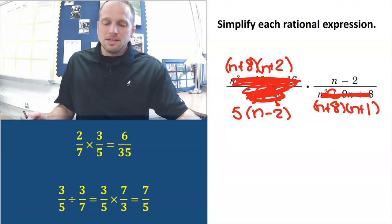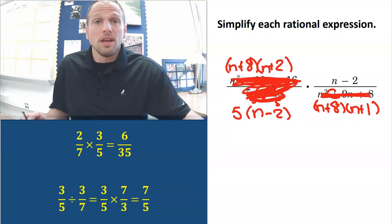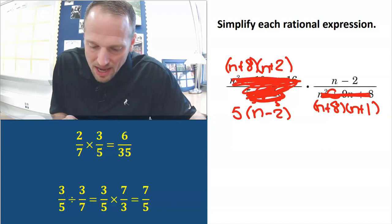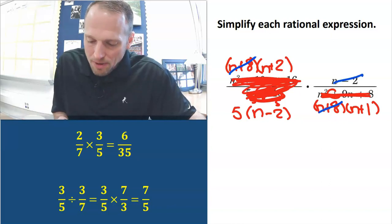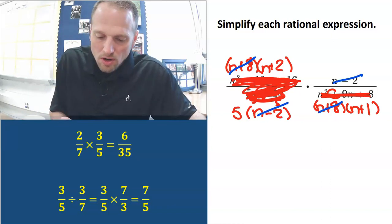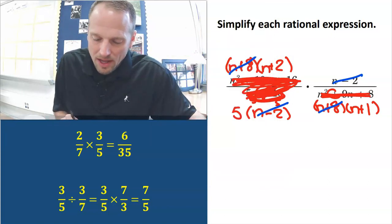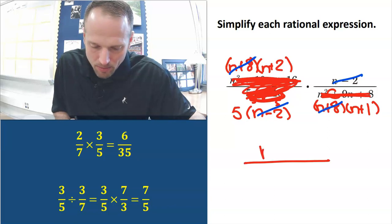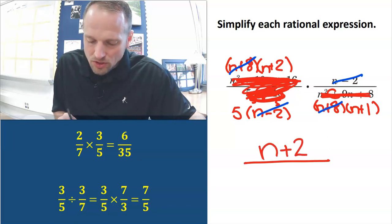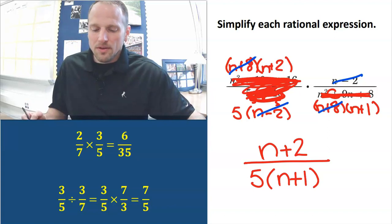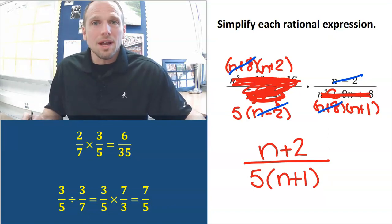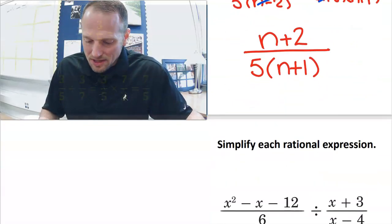Now I can see a bunch of stuff that's going to cancel. The (n plus 8)s cancel, and the (n minus 2)s cancel. What do we have left? On the top, we just have (n plus 2), and on the bottom, we've got 5 and (n plus 1). So our simplified answer is (n plus 2) over 5(n plus 1). This really isn't all that bad.